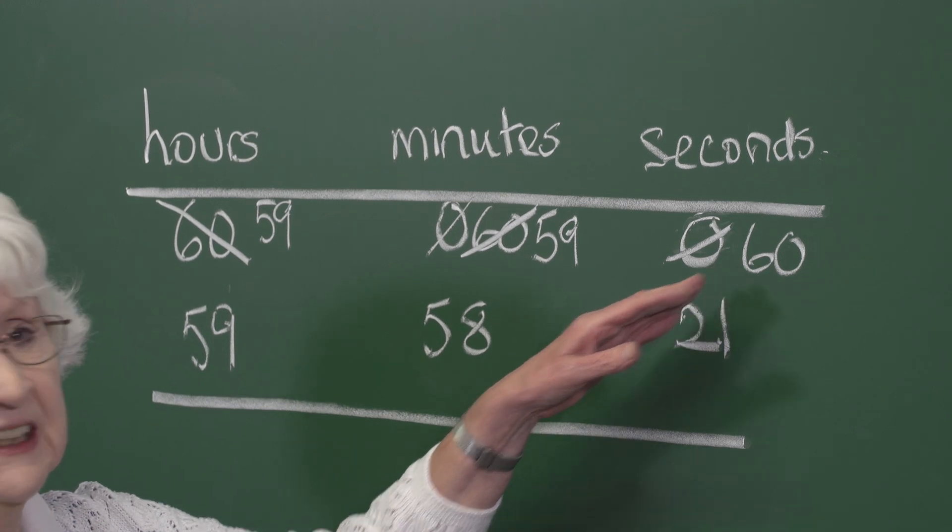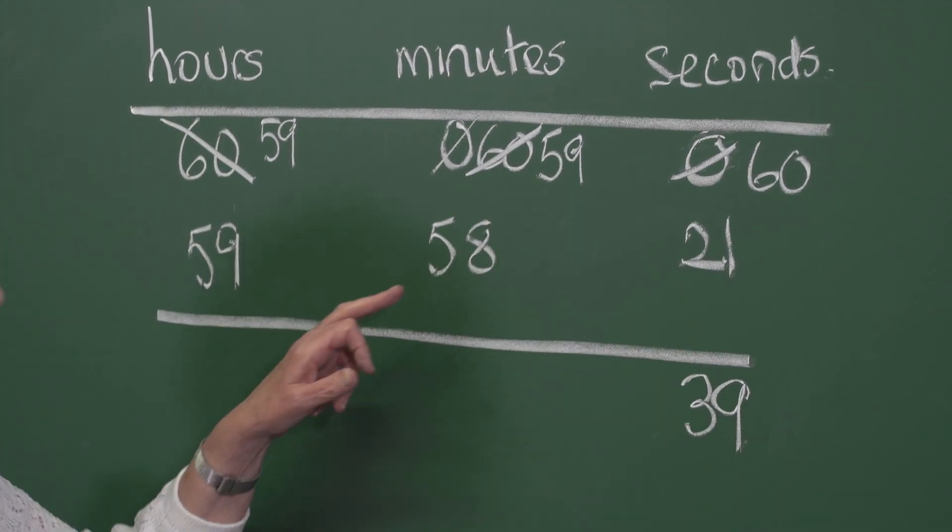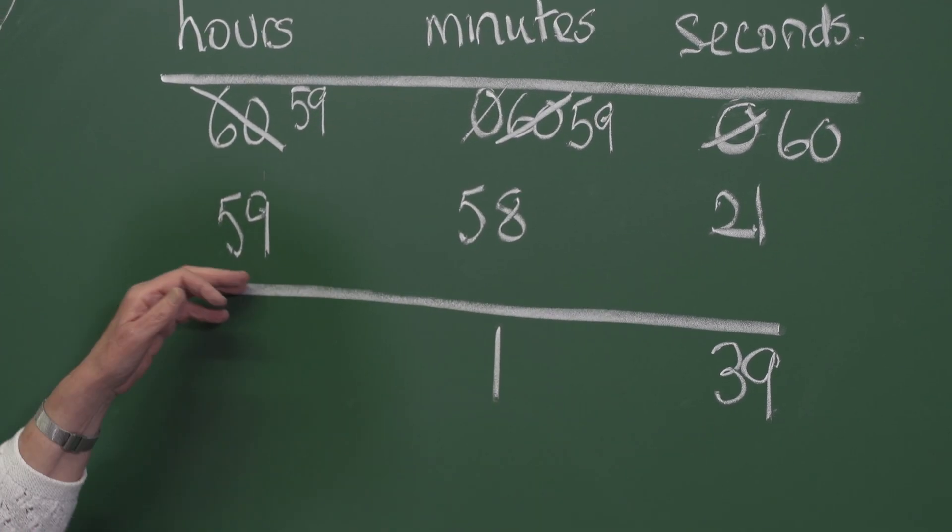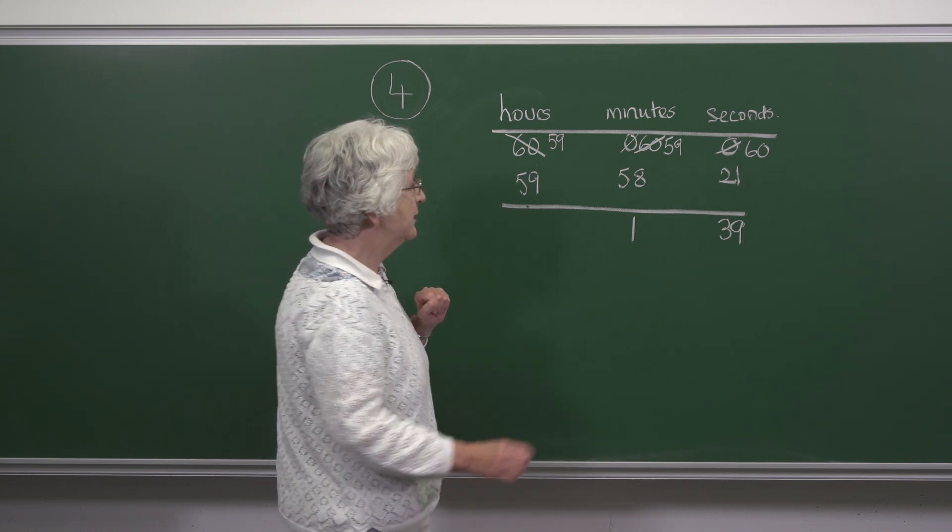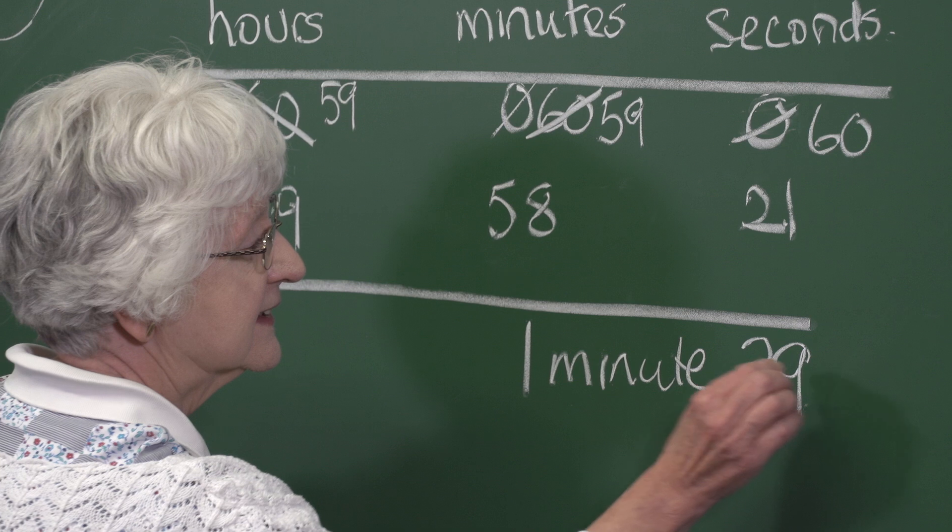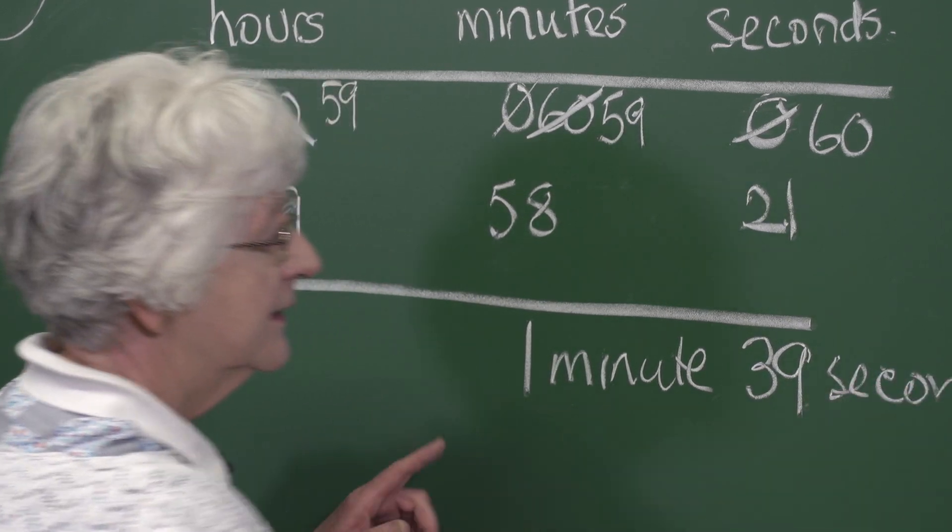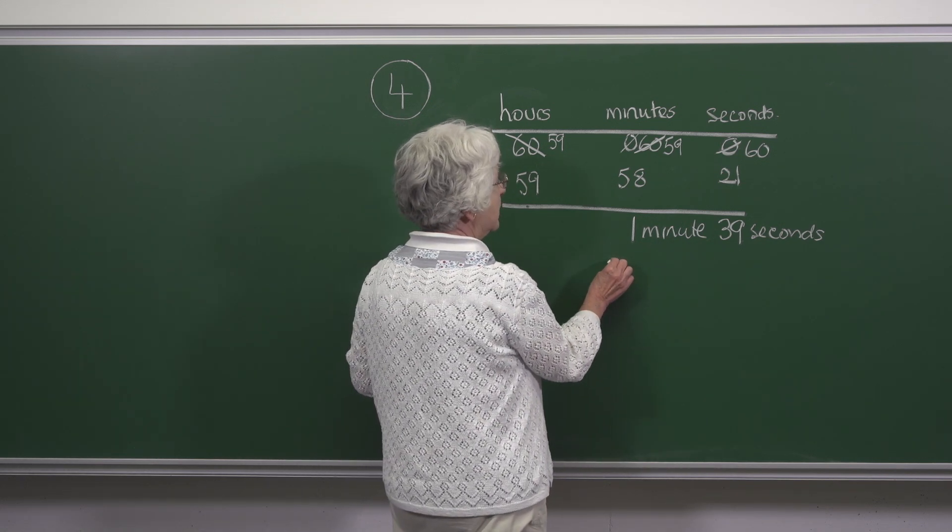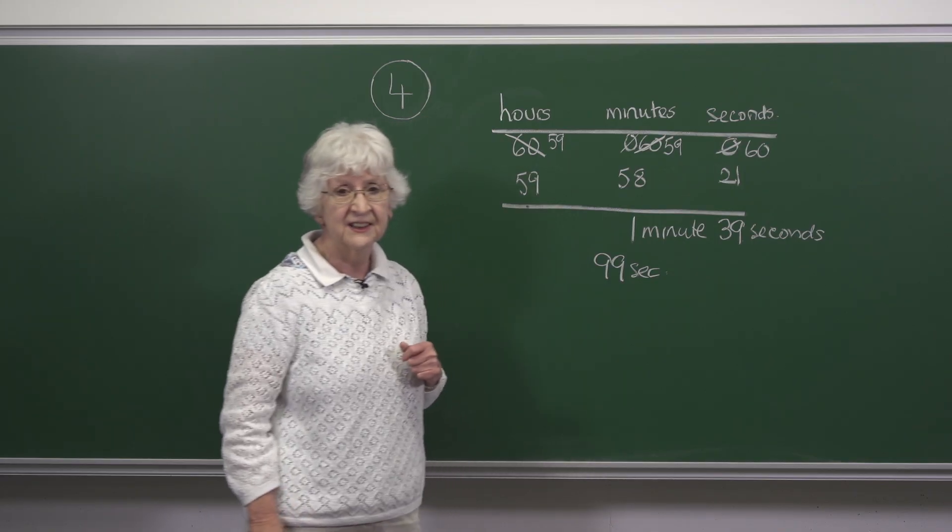21 from 60 is 39. 58 from 59 is 1, and 59 from 59 is 0. So we have 1 minute and 39 seconds. 60 seconds in a minute is 60 seconds, so all together we have 99 seconds which is answer A.